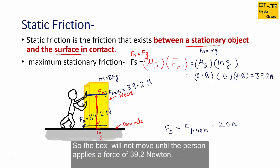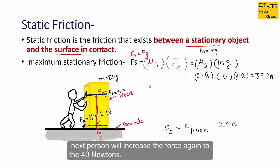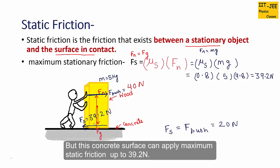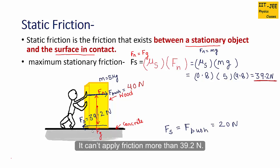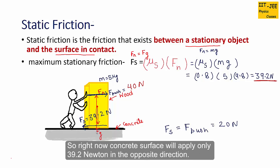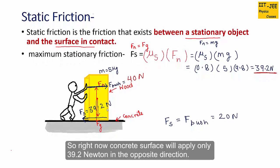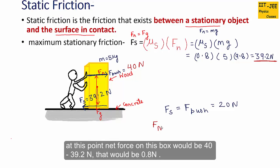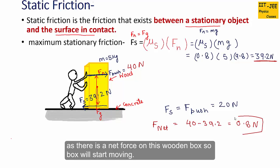When the person increases the force to 40 N, the concrete surface can only apply a maximum of 39.2 N in the opposite direction — it cannot apply more than that. So the net force on the box becomes 40 minus 39.2, which is 0.8 N. Since there is a net force on the wooden box, the box will start moving.